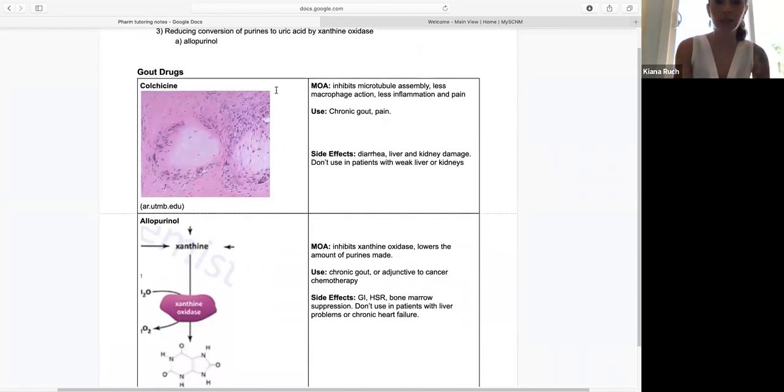Only two drugs to learn this week for gout. The first one we're going to learn is colchicine. In this image, this thing I just circled is actually a gout crystal in the tissue.